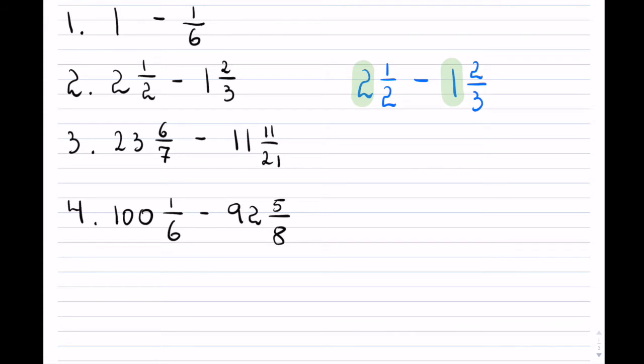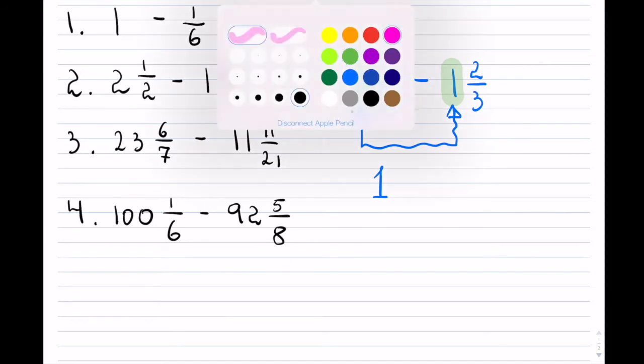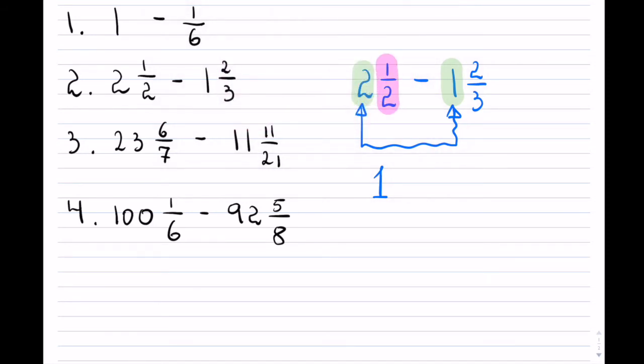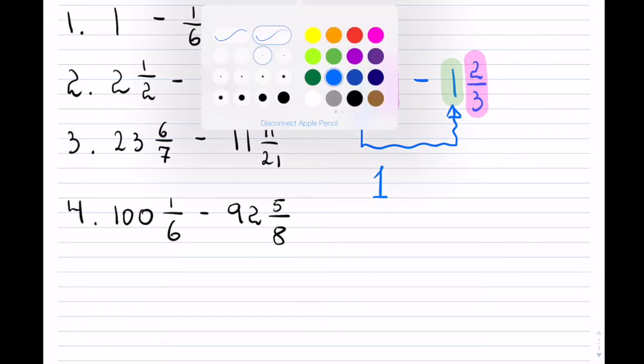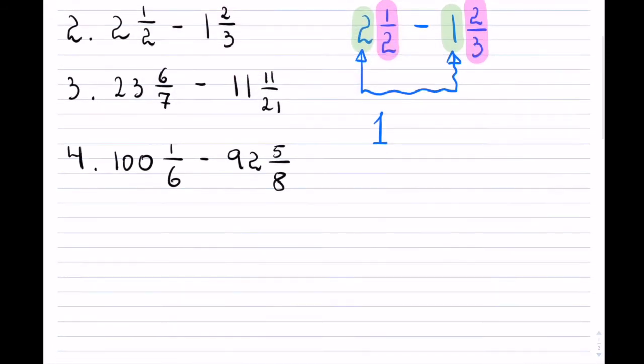And I want to use the same strategy for those ones. So what I like to do is, just like in adding mixed numbers in the video you can watch, I actually simply work with the whole numbers together. So I'm going to say, 2 minus 1 is equal to 1. And then what I will do is, I will take the two fractions, and then I will work with those.